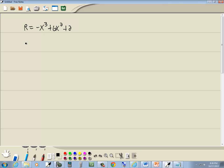Now to find our point of diminishing returns, that's the same as the point of inflection, we first have to find our second derivative.